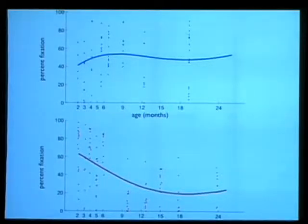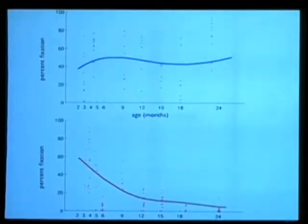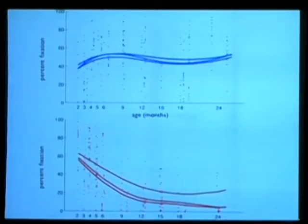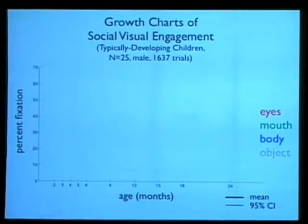We realize that doing cross-sectional work is hard because the children vary over time. But if we do that, we can conquer the variability. What happens is that you have the blue line for one typical child and the red line for one child with autism. It's possible to differentiate those curves. We have those growth charts of social engagement for the first 24 months of life.